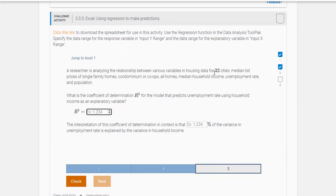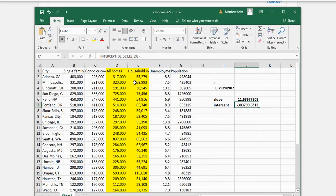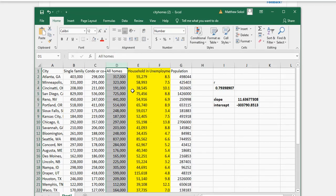All right, so next. What is the coefficient of determination for the model that predicts unemployment rate using household income as the explanatory variable? So unemployment rate right here, using household income as the explanatory variable.